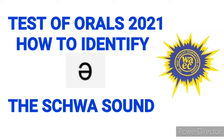Knowing how to identify the schwa sound in a word will help you know how to place stress, and will help you understand which syllable in a word has the primary stress. The schwa sound is one of the most regular sounds in English words and there are no strict rules on how to identify them or how to use them. But I'm going to give you some powerful tips that will enable you to identify them in your exam and not stress them when answering questions on syllable stress.